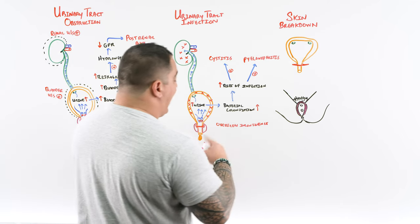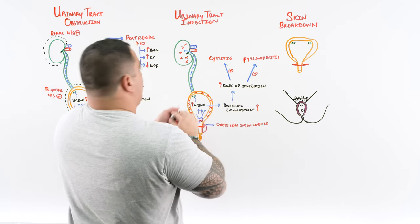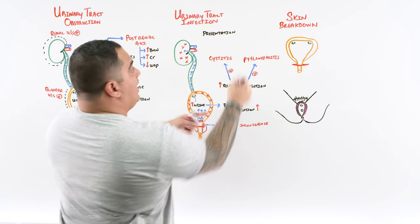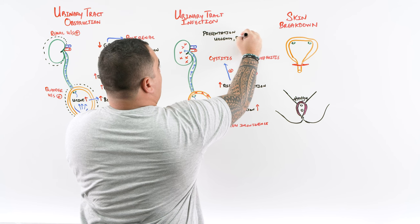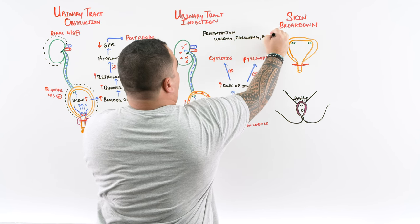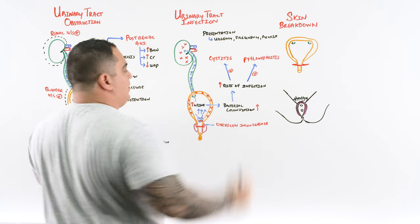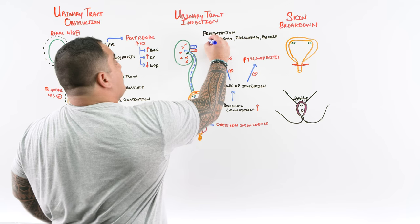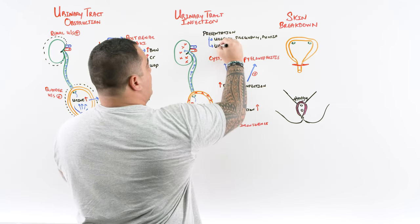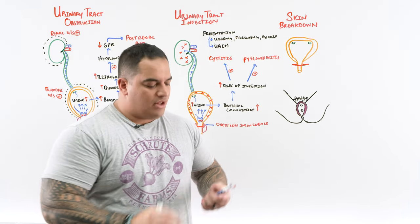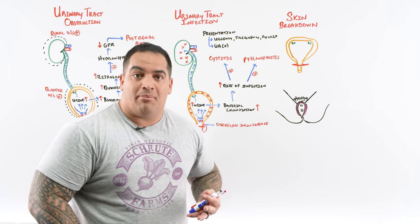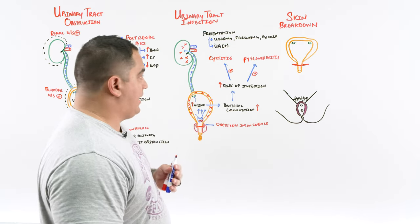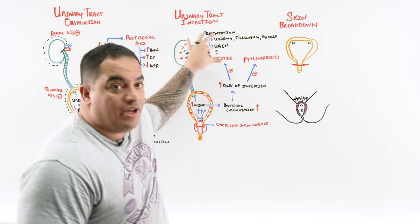Watch for patients with overflow incontinence who then present with urgency, frequency, and dysuria — these suggest a UTI complication. Obtain a urinalysis; if positive for leukocyte esterase, nitrites, white blood cells, bacteria, or casts, this is suggestive of a urinary tract infection and antibiotics should be started.